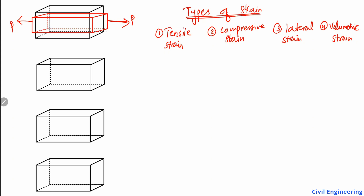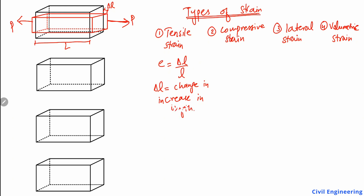Because of this load the object shows some increase in this direction. If I call it Delta L — the change in length — and the original length is L, then tensile strain is defined as the change in length divided by the original length. This change in length will always be an increase in length, so we call it tensile strain.